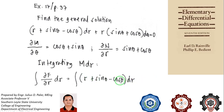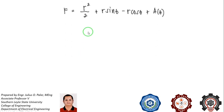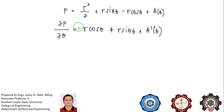Integrating: r dr gives r²/2, sinθ dr gives r·sinθ, and cosθ dr gives r·cosθ, so we get f = r²/2 + r·sinθ - r·cosθ + a(θ), where a(θ) is the constant of integration as a function of θ.